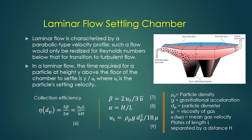Here y is the height above the floor of this chamber. The time required for a particle at height y above the floor of the chamber to settle to the bottom is calculated as the distance divided by the velocity: y/ut, where ut is the terminal velocity of that particle. So the time required to settle is y/ut, where ut is the particle settling or terminal velocity.